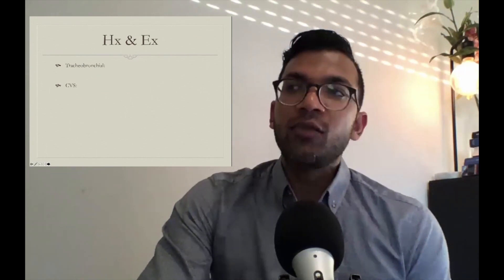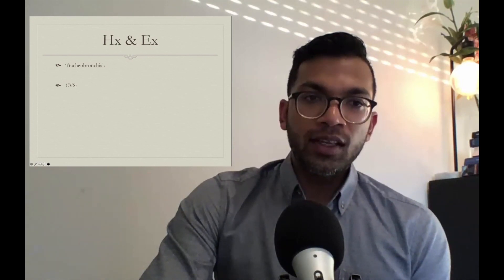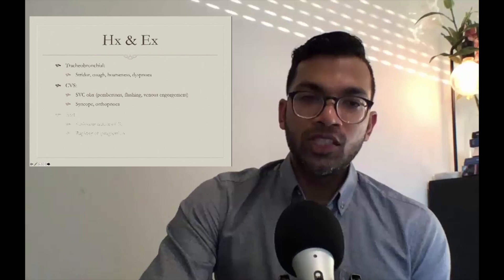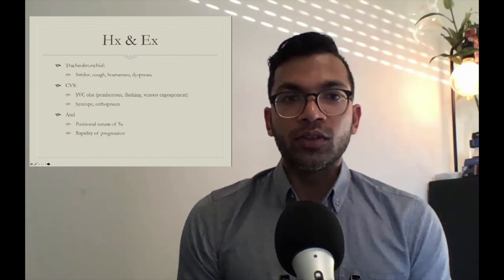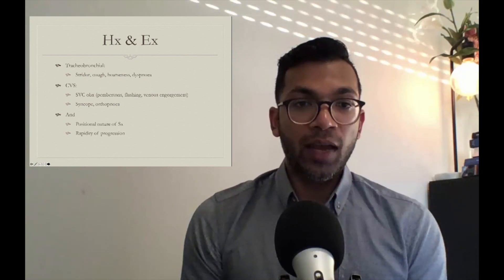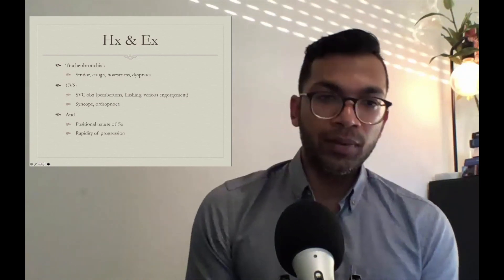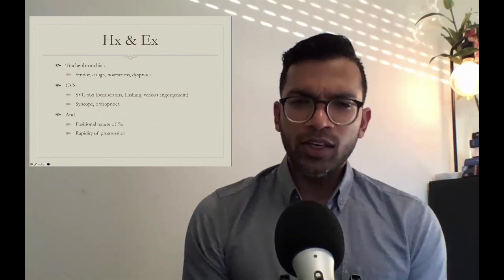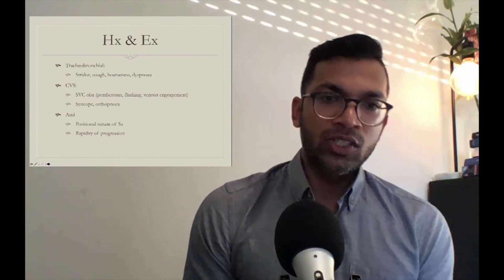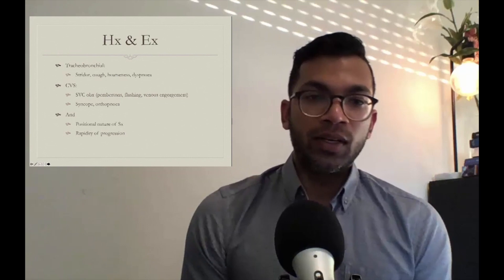In history and examination it's really good to have a structure. I divide this into tracheal bronchial symptoms, cardiovascular symptoms, and then the positional nature of any of these symptoms and the rapidity of progression. Tracheal bronchial symptoms would include stridor, cough, hoarseness of voice, and dyspnea. Cardiovascular symptoms could be those of superior vena cava obstruction: Pemberton sign, flushing, venous engorgement, edema in the upper limbs, syncope, orthopnea, decreased exercise tolerance. And I really want to know if there are any particular positions that are better for the patient, any positional symptoms and the degree of that, as well as the rapidity of progression, because this might make us want to go quicker with rebooking the surgery.